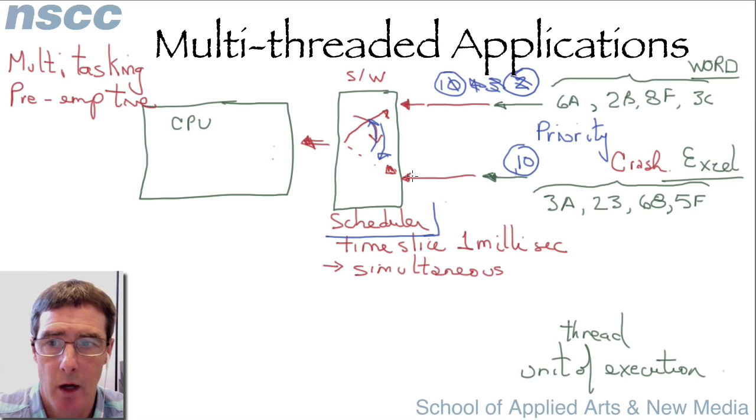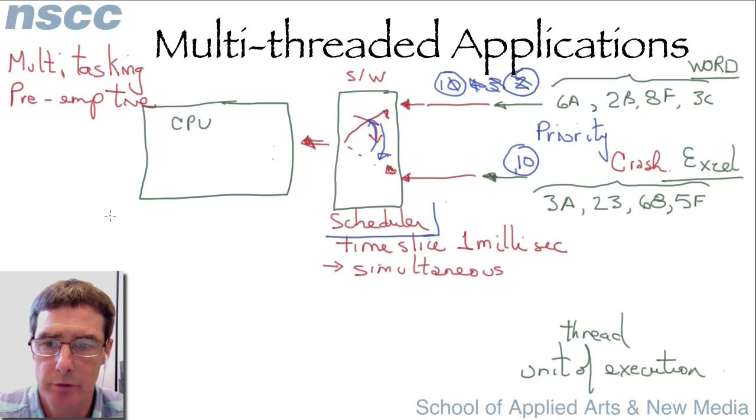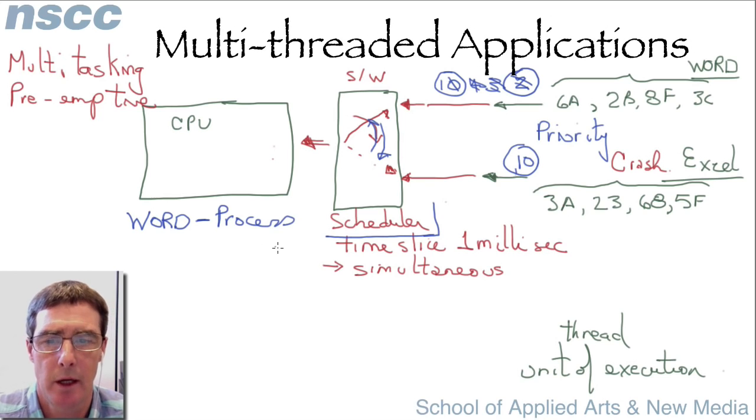So this is how a multitasking operating system works. Now we talk here about multi-threaded applications because most programs today, and so we're going to look at a program called Word, and now we're going to call this a process. So a process is really a name for a program. But most programs today are multi-threaded.